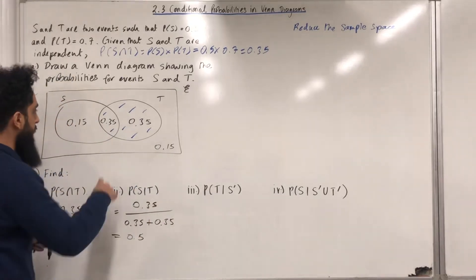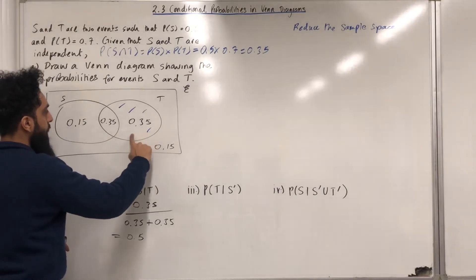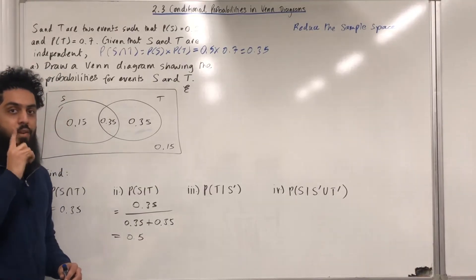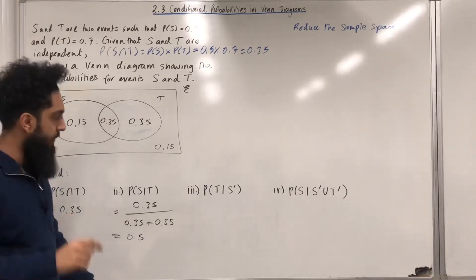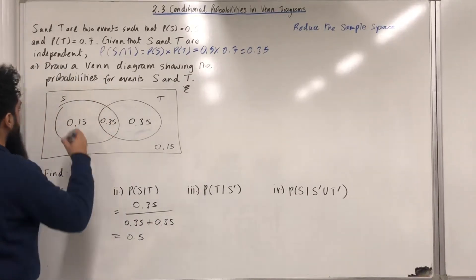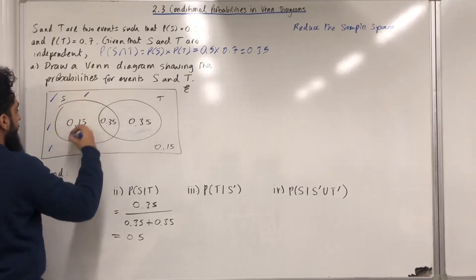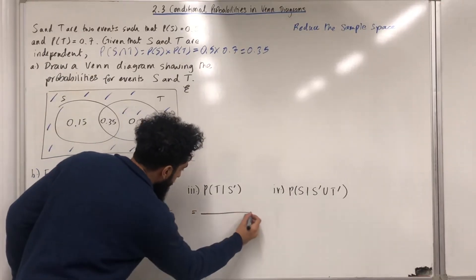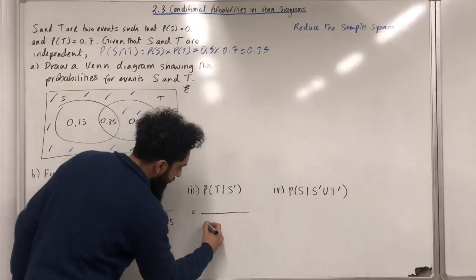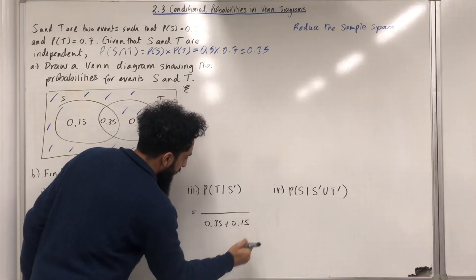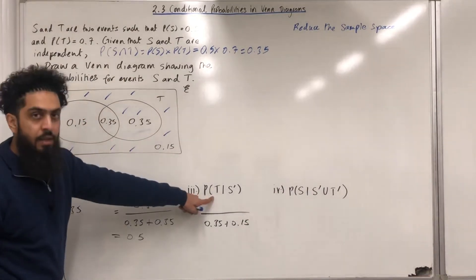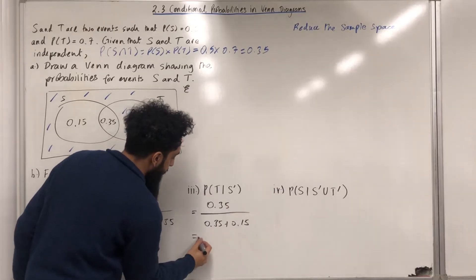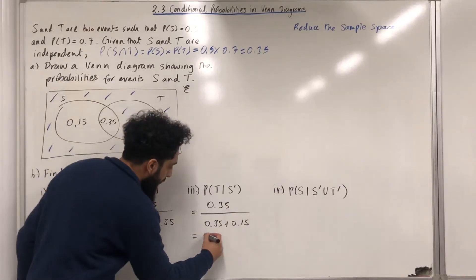Part 3: I'll quickly delete the shading. We want probability T given that event not S takes place. We reduce the sample space to everything outside of S and shade that region. The probability will be out of 0.35 plus 0.15. For the event not S, the part representing event T is 0.35, so 0.35 over 0.50, which gives 0.7.